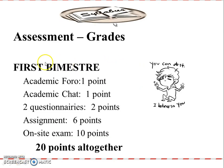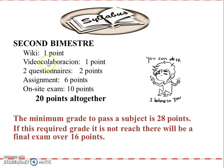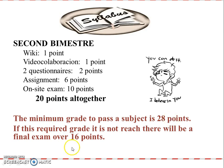For the first bimester grades, we will have a forum, chat, and two questionnaires, plus the assignment and the on-site exam — these add up to 10 points altogether. For the second bimester, the activities are a wiki, video, two questionnaires, the assignment, and the on-site exam, totaling 40 points altogether. The minimum grade to pass the subject is 28 points. If this minimum is not reached, there will be a final exam worth 16 points.